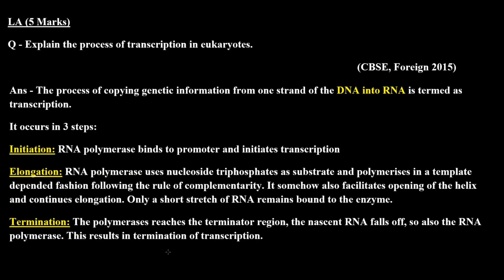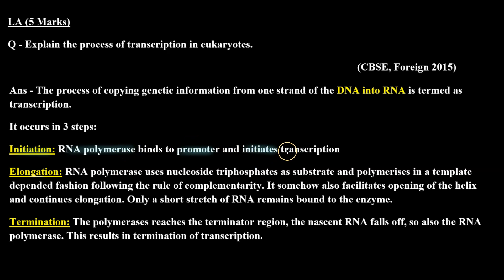Now in eukaryotes, transcription occurs in 3 steps: initiation, elongation, and termination. In the initiation step, RNA polymerase binds to the promoter region and initiates or begins transcription.